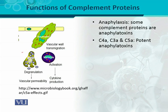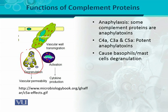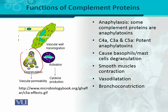When mast cells or basophils are degranulated by anaphylatoxins, certain chemicals are excreted that are good for smooth muscle contraction. The inflammation process starts, vasodilatation begins, and sometimes bronchoconstriction occurs — the vessels in the lungs constrict. These are the adverse or hyper-effects of these complement proteins, which is why they are called anaphylatoxins and this process is called anaphylaxis.